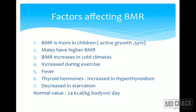Thyroid hormones are important for BMR — hyperthyroidism causes weight loss and hypothyroidism causes weight gain, mainly through their effect on BMR. BMR is also decreased in starvation. The accepted normal value for BMR used in calculations is 24 kilocalories per kilogram body weight per day. For a 70 kg person, that is 70 × 24 = 1680 kilocalories per day to maintain BMR. This is essential knowledge when prescribing a diet.